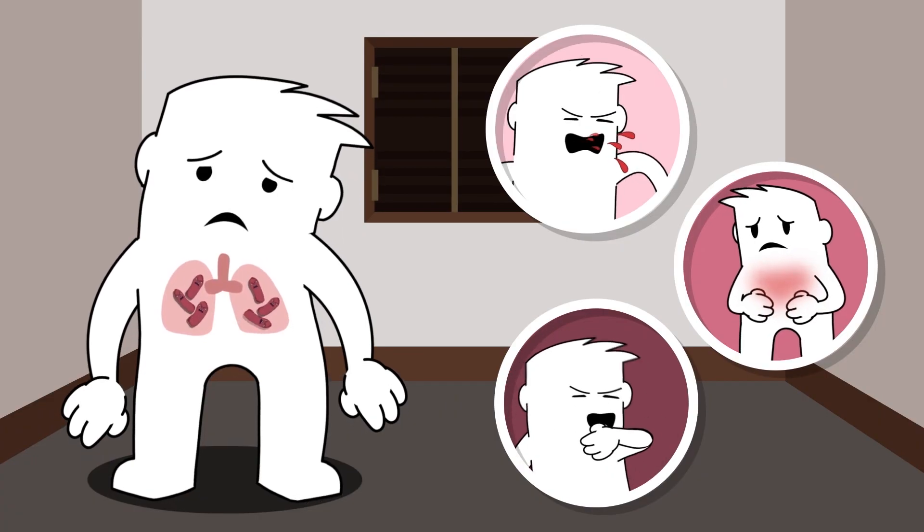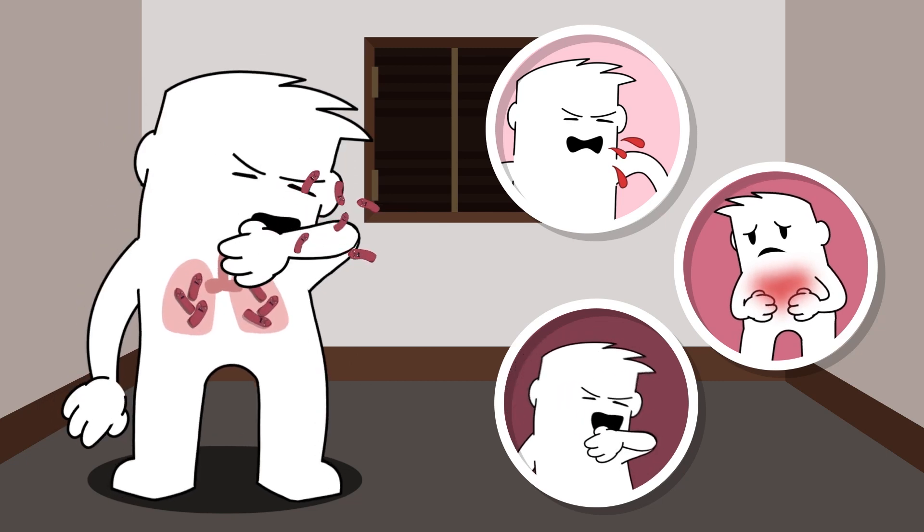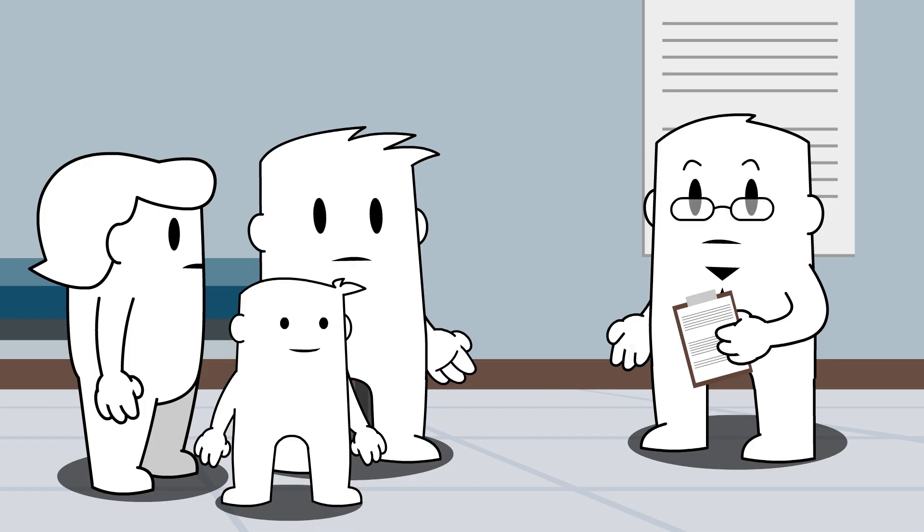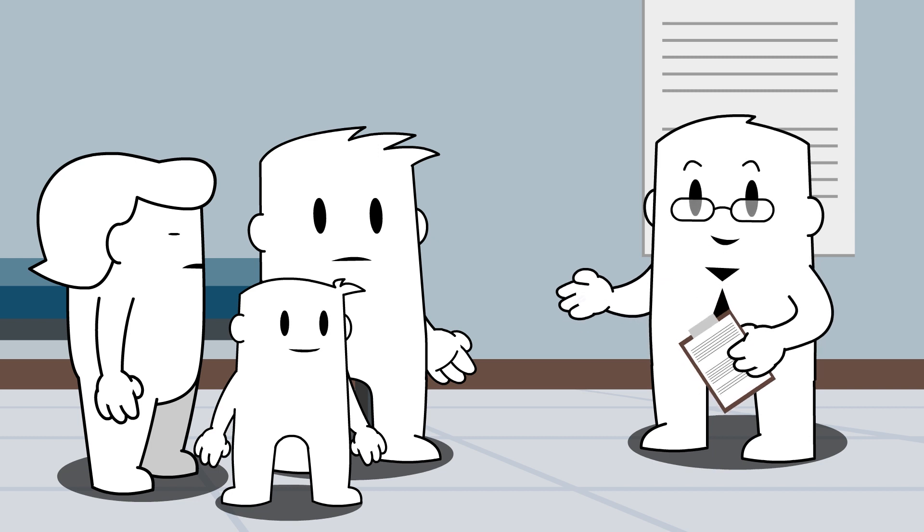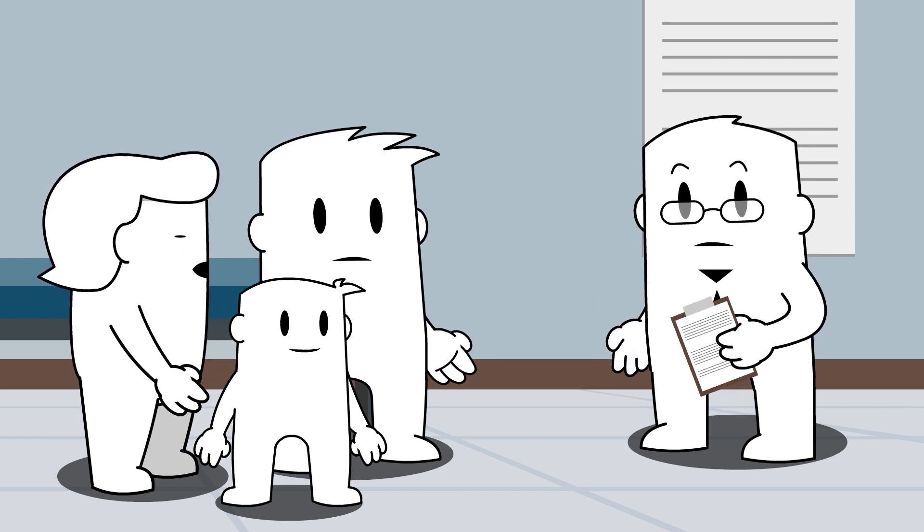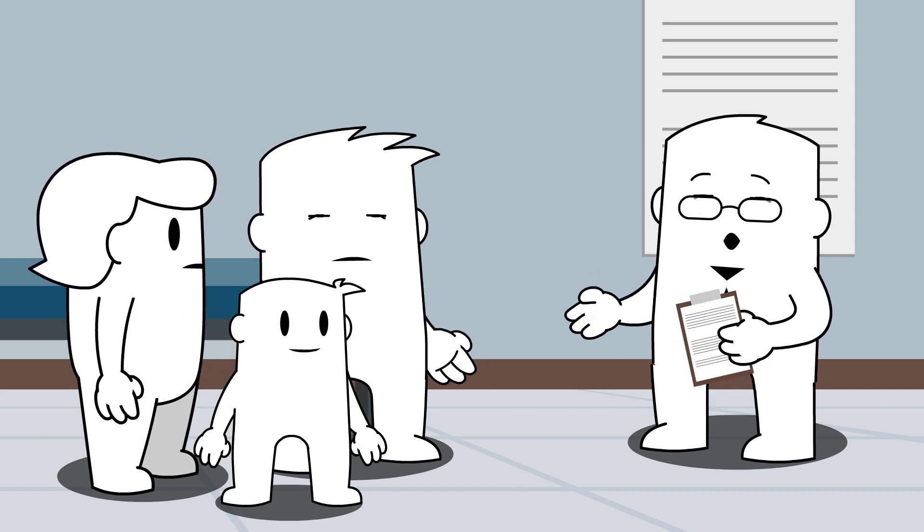Symptoms of active TB disease include a chronic bad cough, pain in the chest or coughing up blood, weight loss, and fevers. When the nurse, doctor, counselor, or active case finder says they need to screen the family for TB, it means they want to find out if anyone in the household has any of these symptoms.